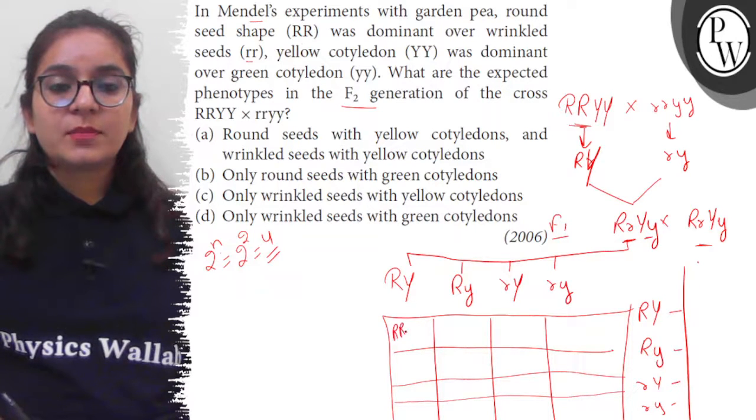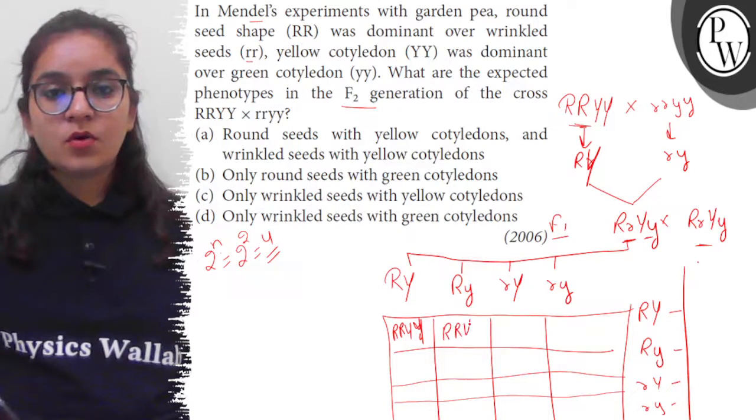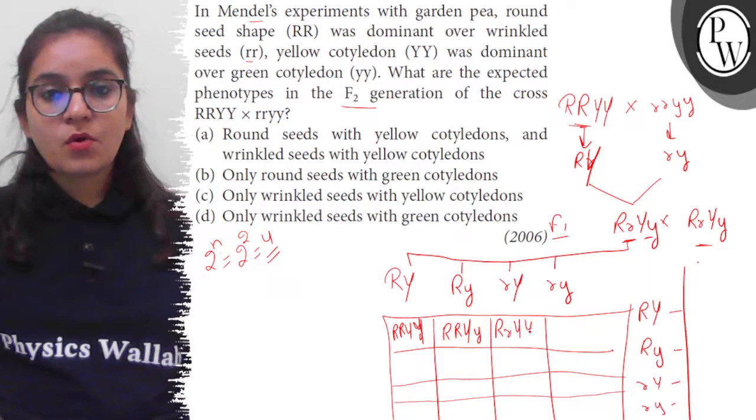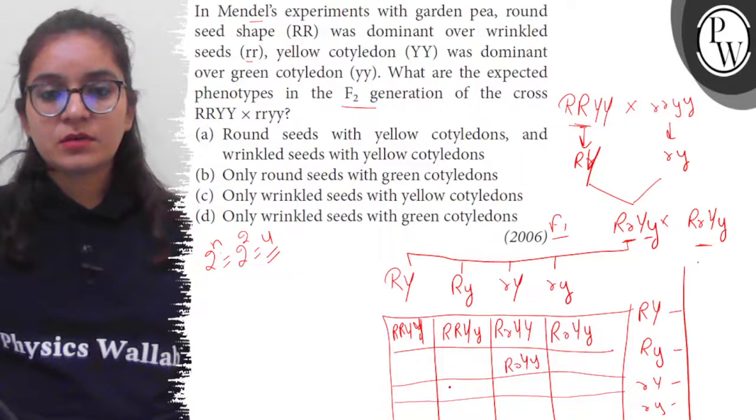This is capital R, capital R, capital Y, capital Y - meaning round and yellow homozygous. Round homozygous, yellow heterozygous. Round heterozygous, yellow homozygous. Heterozygous round, heterozygous yellow. You get the same on this diagonal.